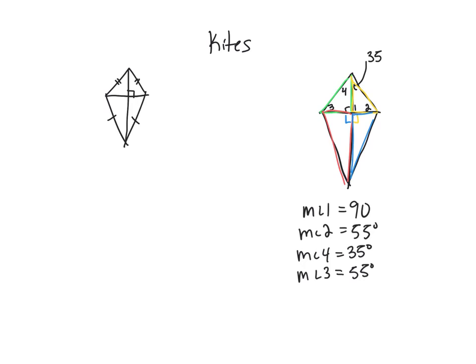So that should get you kind of through the assignment for today. You got three questions about trapezoids and then finding some angle measures and some side lengths in a kite.